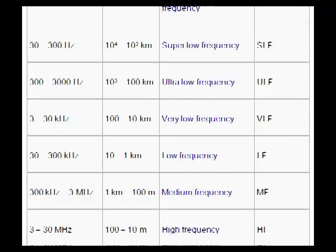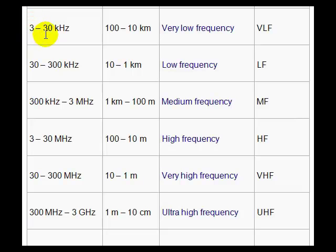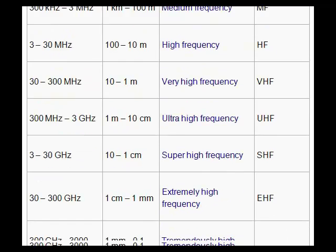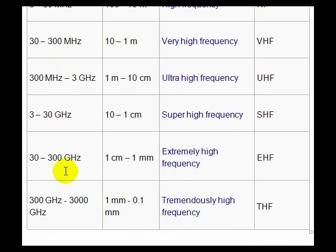The radio frequency actually starts from 3 kHz onwards, and there we call it very low frequency. Then it goes by names like low frequency, and from 300 kHz to 3 MHz we call it medium frequency, then from 3 MHz to 30 MHz we call it high frequency, and so on. Finally, till about 300 GHz it is extremely high frequency, and this is how the radio frequency is covered in the spectrum.